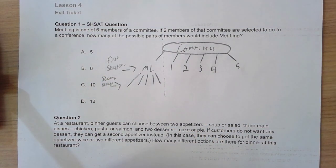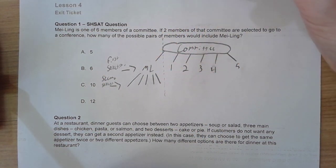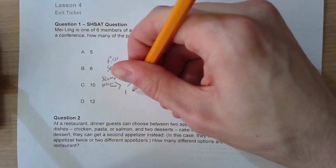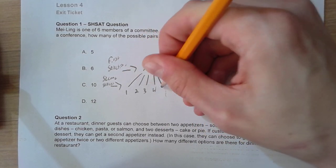What does that mean? It just simply means that if Mei Ling is selected, she cannot go with herself to the conference. So when Mei Ling is selected, her other options are person one, two, three, four, and five.